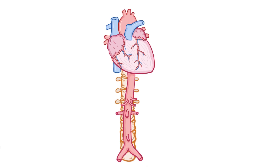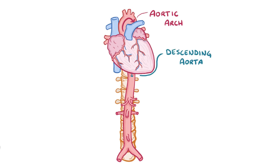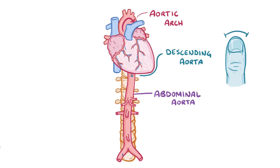Normally, blood heading toward the lower parts of the body exits the heart, swoops through the aortic arch, and then flows downward through the descending aorta, which is a large muscular blood vessel about as wide as a thumb. The descending aorta runs along the back of the abdominal wall in front of the spine, and that part is called the abdominal aorta. The abdominal aorta then forks into the common iliac arteries near the 4th lumbar vertebra, or L4.